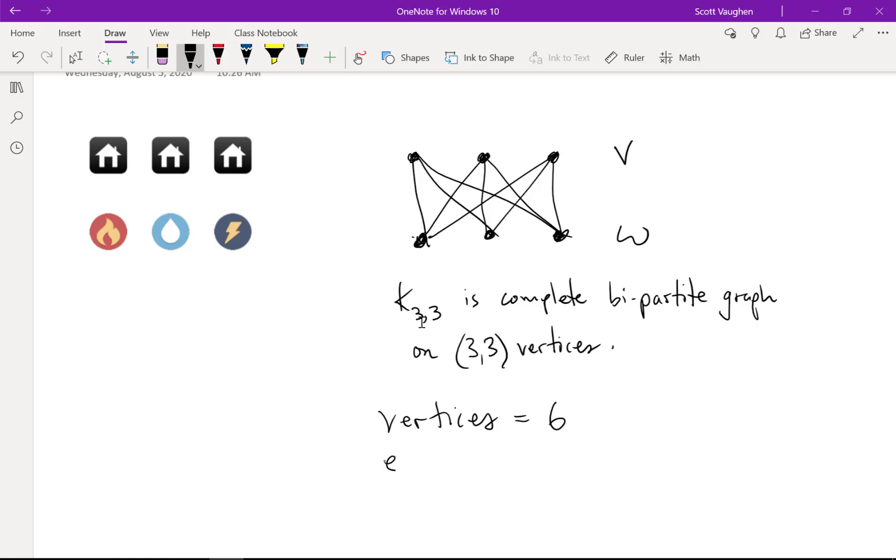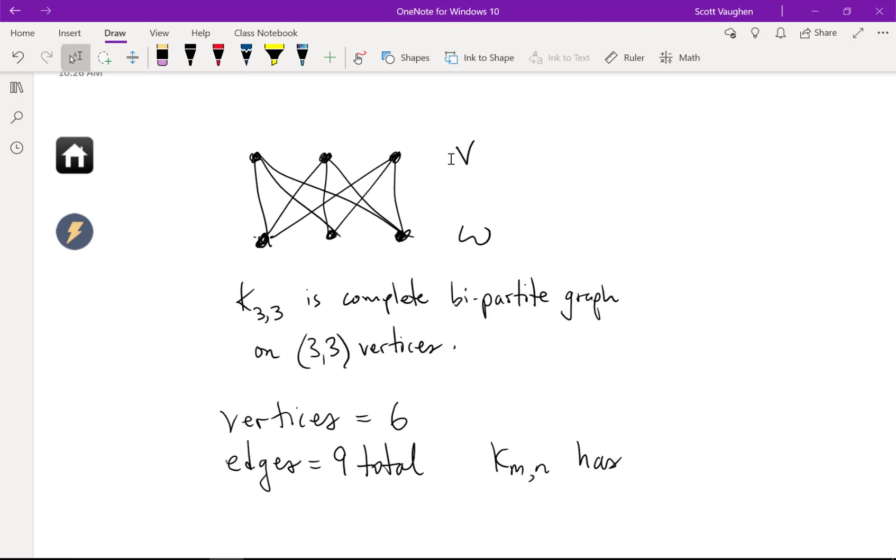And how many edges are there? Well, each vertex, the way I drew it, I started with V, and so each of the three vertices, I drew three edges, so that's three times three. There are actually nine edges. In fact, we could just extend, based on the definition, that K sub MN has M times N edges. Because you're just taking each vertex in the first set, and there are M of them, and connecting it to the N vertices in the other set, let's say W. So, you just multiply M times N, and that's a formula for the number of edges.